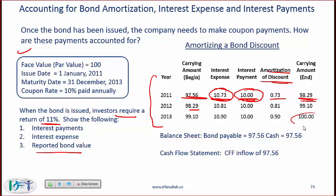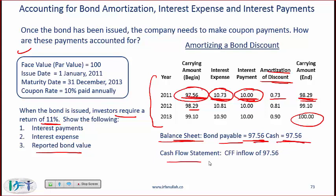Eventually, following this process, we will end up at 100. On the balance sheet when the bond is issued, we show a bond payable of 97.56 and an increase in cash of 97.56. On the cash flow statement, we show a cash flow from financing — because a bond is a financing instrument — and this is an inflow of 97.56.